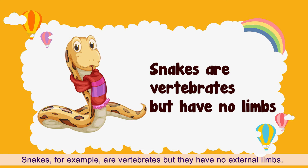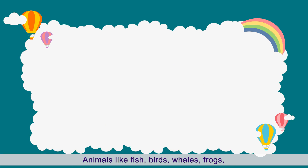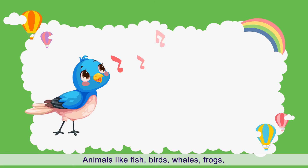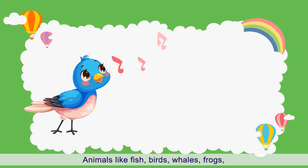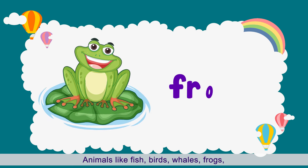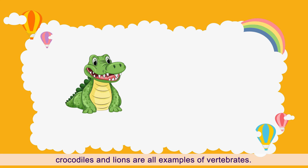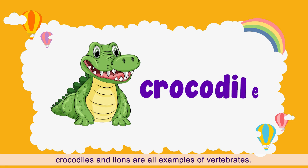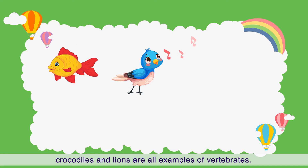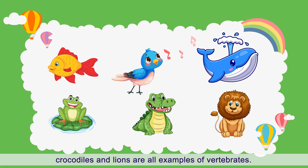Snakes, for example, are vertebrates but they have no external limbs. Animals like fish, birds, whales, frogs, crocodiles, and lions are all examples of vertebrates.